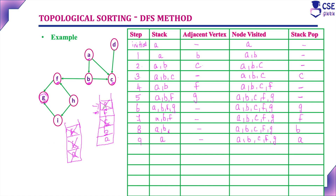In this graph, some vertices remain unvisited: D, H, and I have not been checked. In alphabetical order, we next consider D and push D into the stack. The adjacent vertex to D is C, but C is already visited. So D has reached a dead end, and we pop D from the stack.